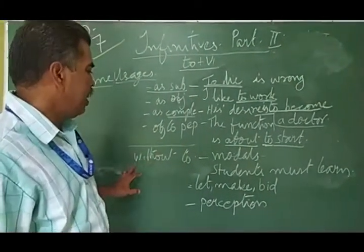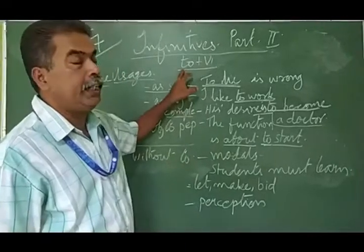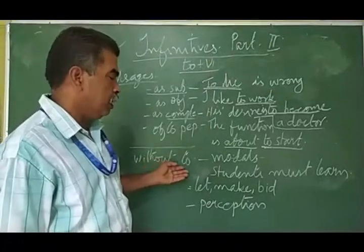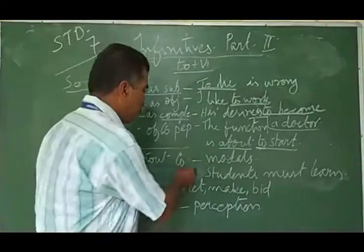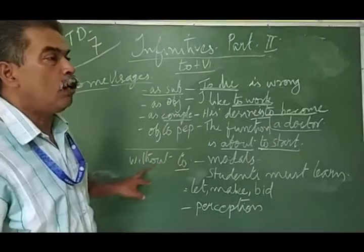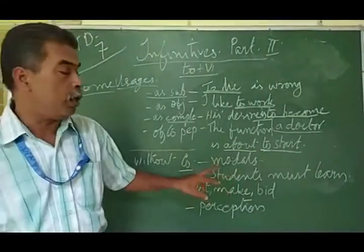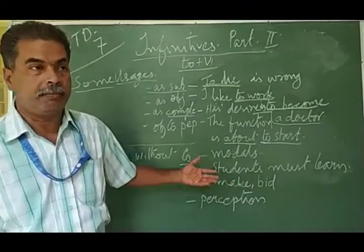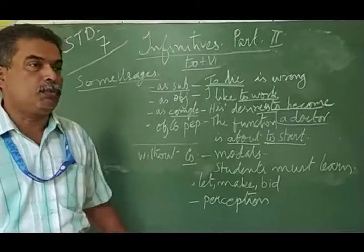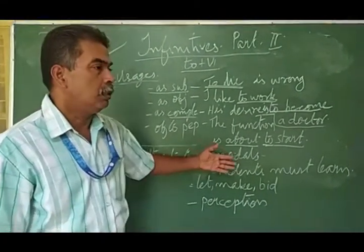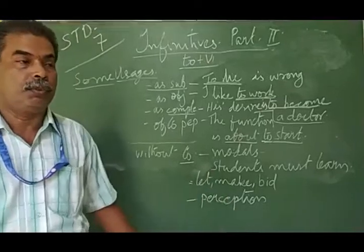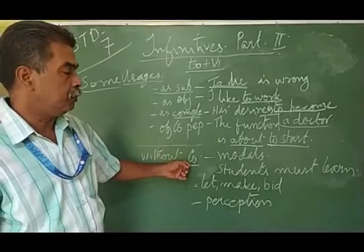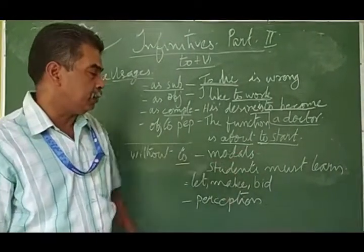And there are some - I told you infinitives are made with to plus v1 form. There are certain verbs which do not take to with it, so they are called infinitives without to or bare infinitives. Bare means without. Bare-footed we normally say - a person who does not wear chappals, who is just walking on his foot. So we call it bare infinitives.